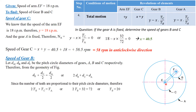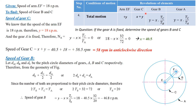To find Tb, we use the geometric relationship: the diameter of B plus the radius of C equals the radius of A, which gives 2Tb + 2Tc = Ta in terms of number of teeth. Substituting the known values of Tc and Ta, we calculate Tb. Substituting Tb into the gear B equation gives the speed of gear B as −46.8 rpm, meaning 46.8 rpm in the clockwise direction. This is how we found the speeds of gears C and B for the given epicyclic gear system. Thank you.